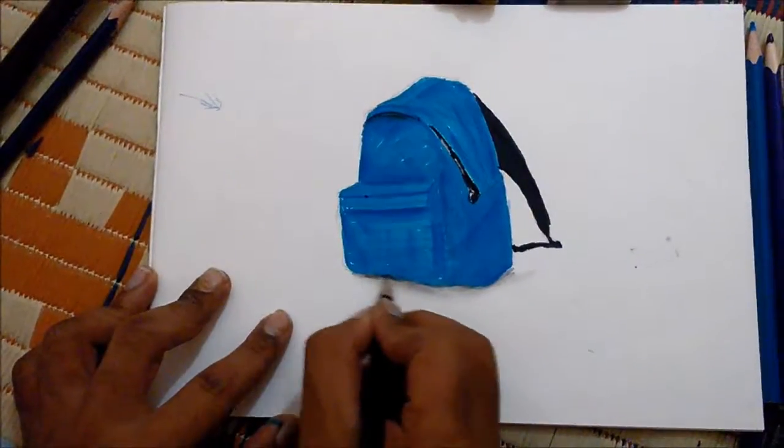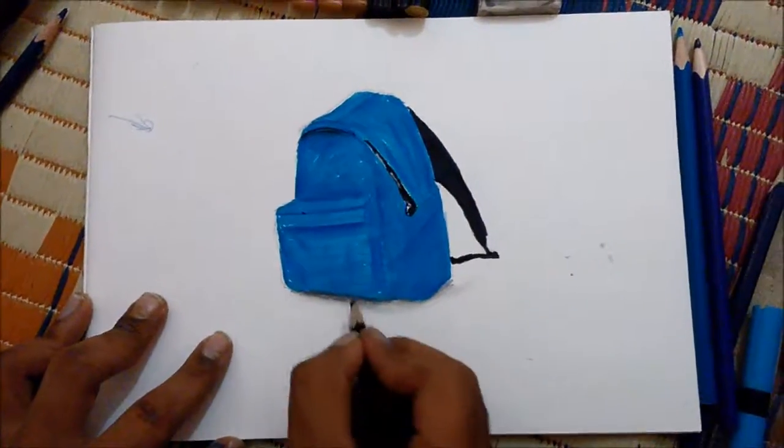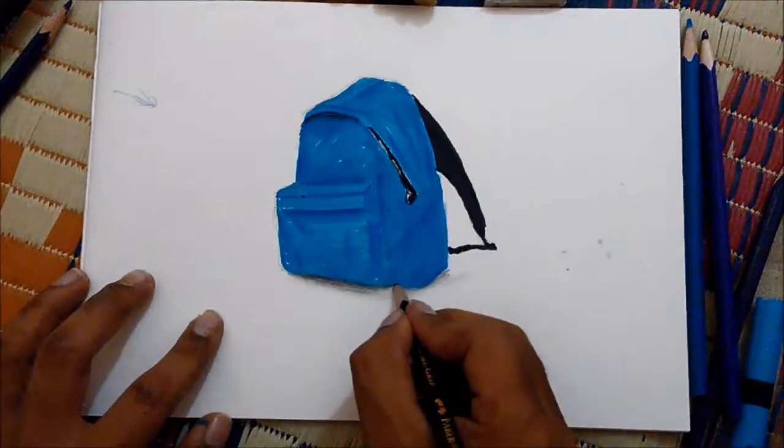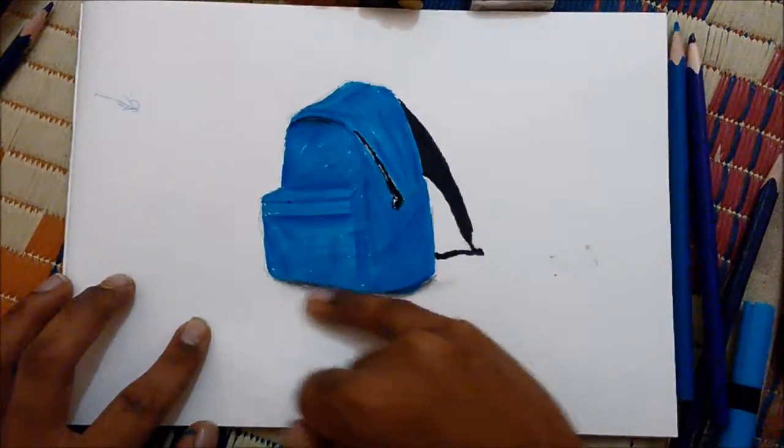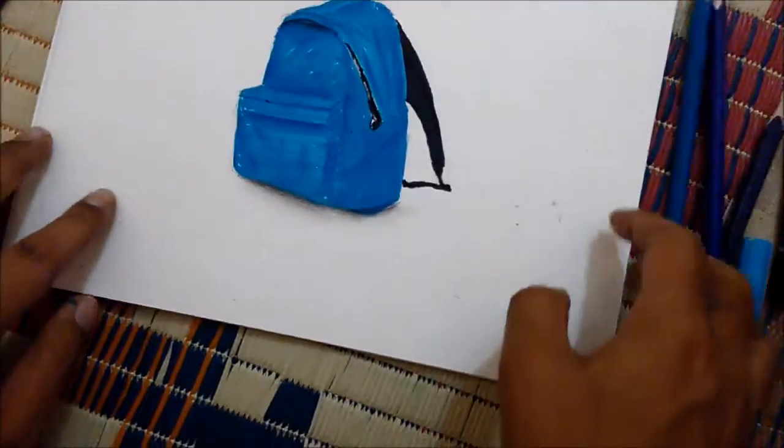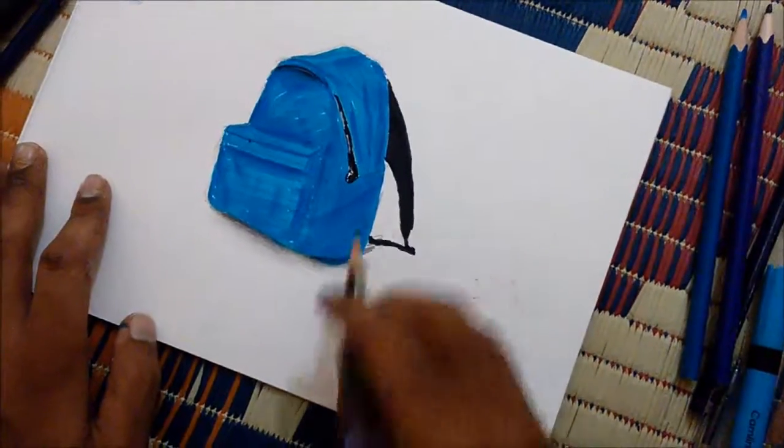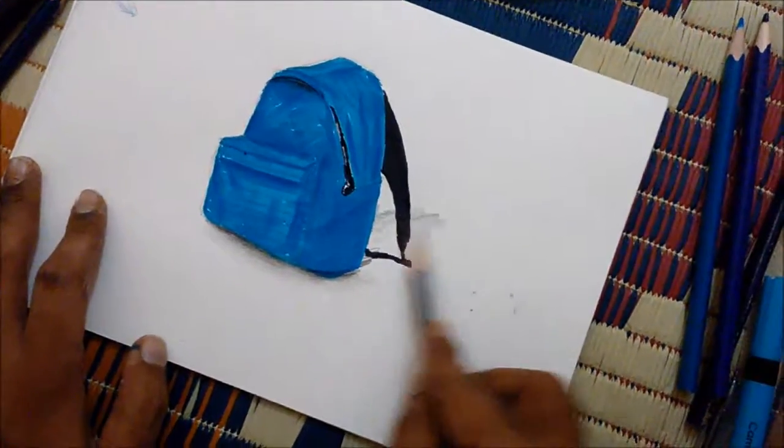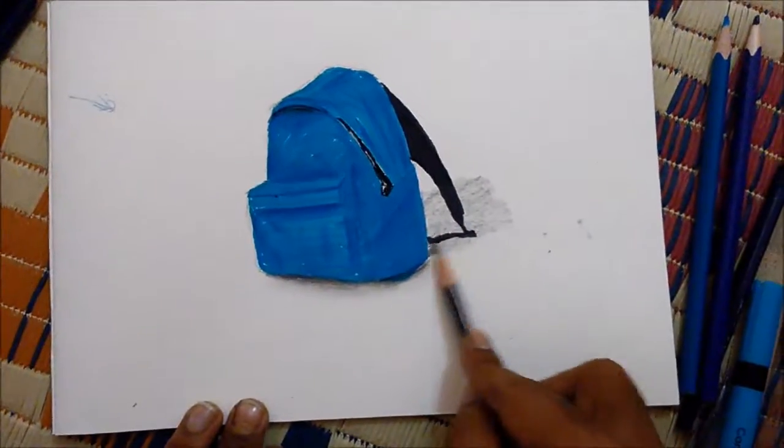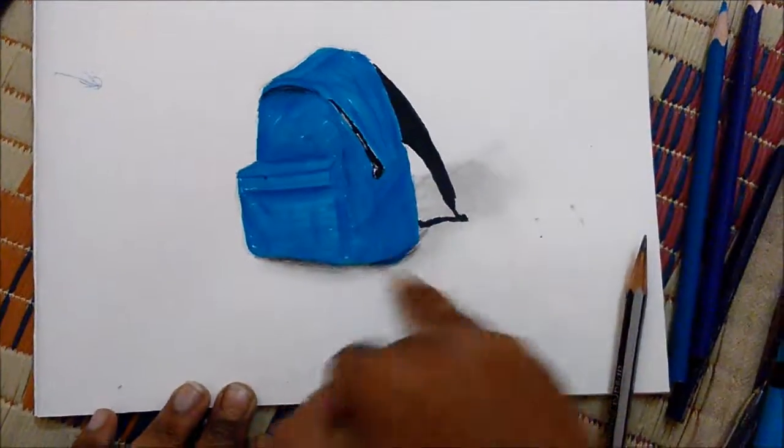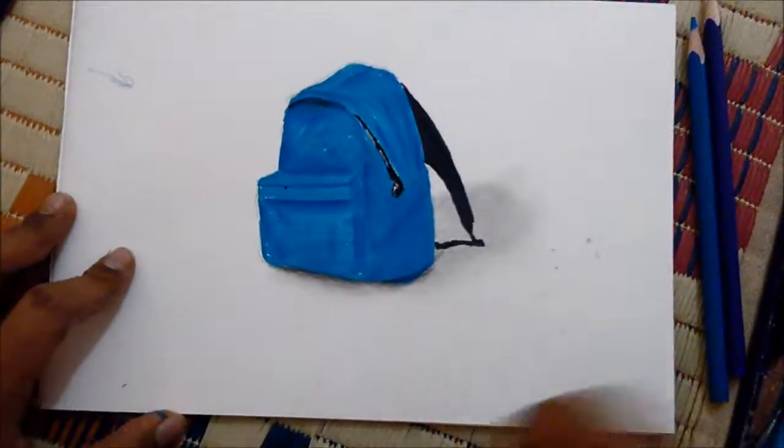Use the black color pencil here for shadows. When you are drawing, you have to start with light color. Then you should move to dark color. Smudge it with your hand. Then the light is in this side, right? So put the shadow in the back side.